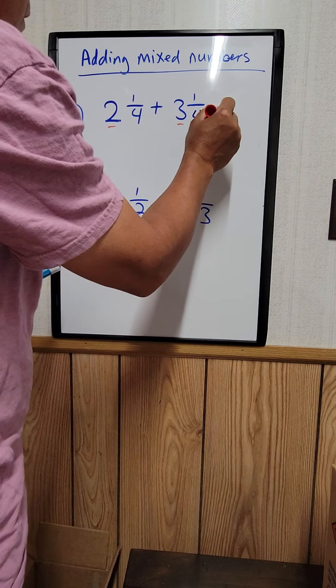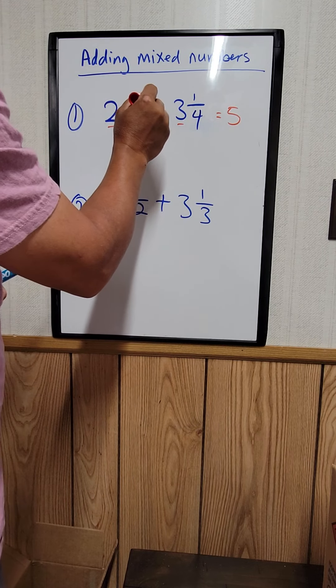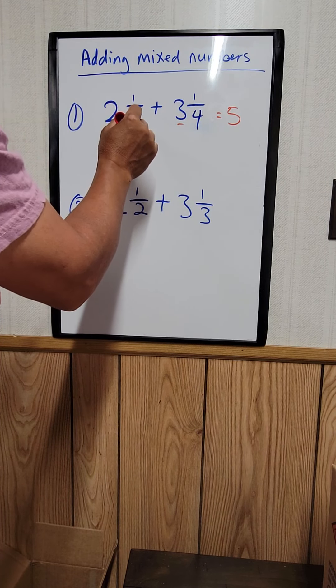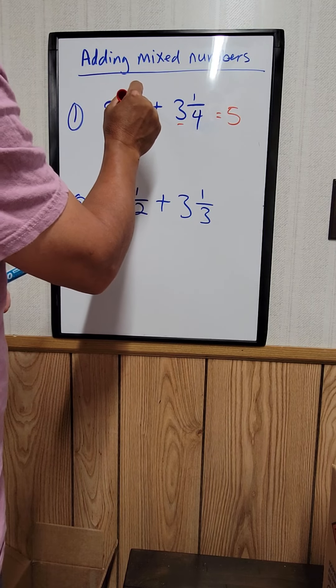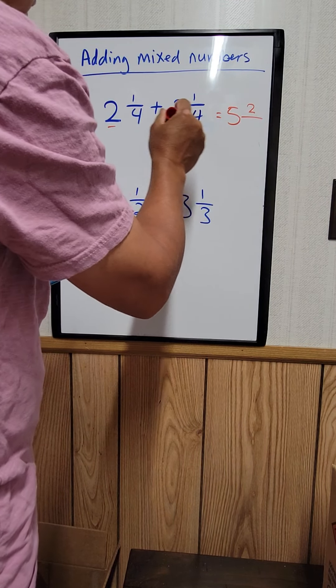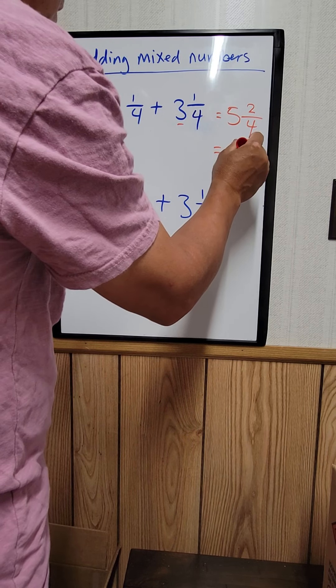Therefore, all you need to do is add the whole number with the whole number. So 2 plus 3 is equal to 5. And then since the fraction parts are the same, I just add 1 plus 1 which is equal to 2 over 4, and you can reduce that as 5 1/2. That's your answer.